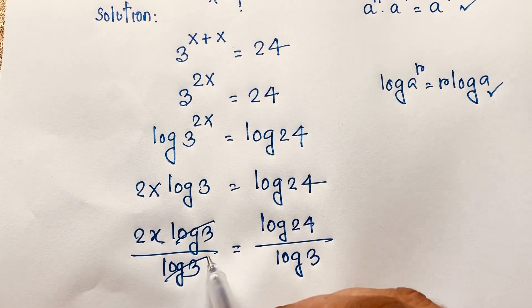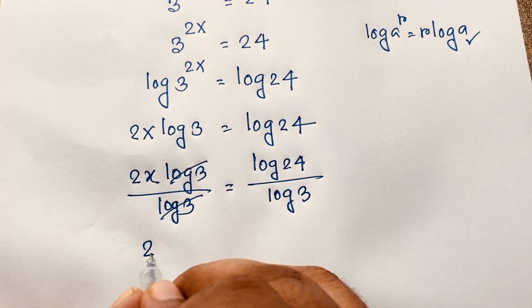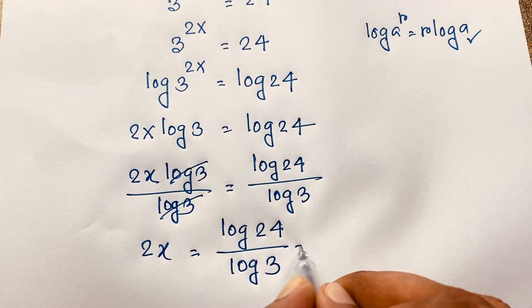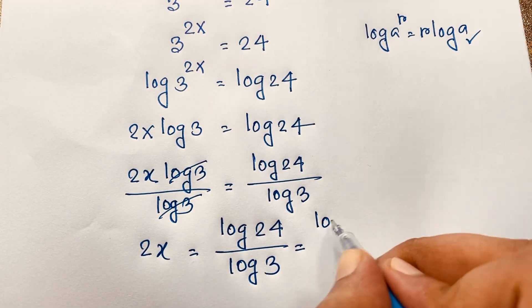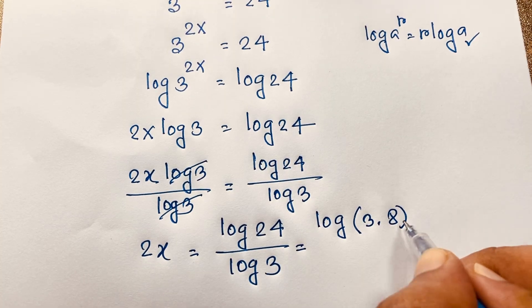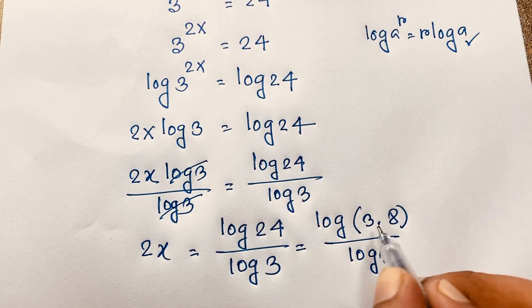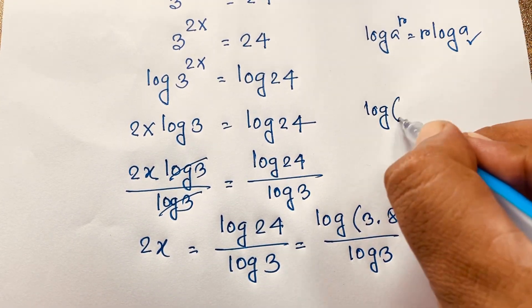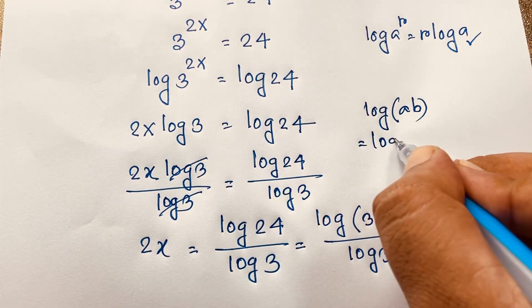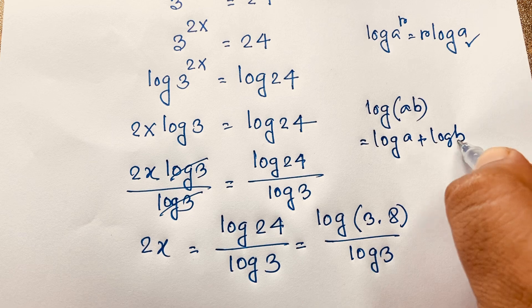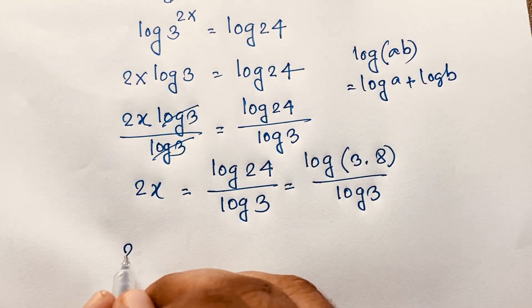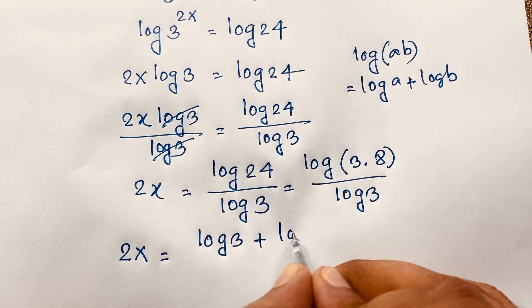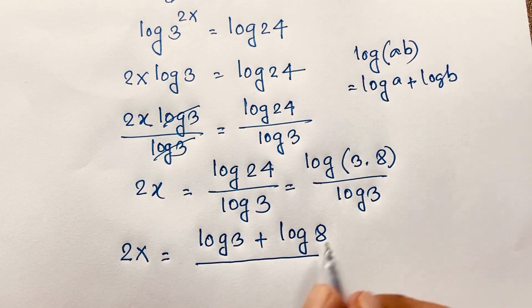Now these cancel out. We will find that 2x is equal to log 24 over log 3. Now at this moment I evaluate this 24. So it will be log of 3 times 8, over log 3 — since 3 times 8 equals 24. Now applying the rule log(a·b) equals log a plus log b, this expression becomes 2x equals log 3 plus log 8, over log 3.